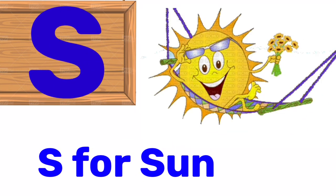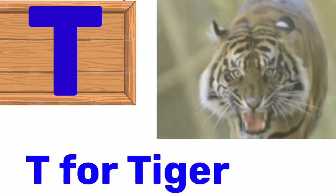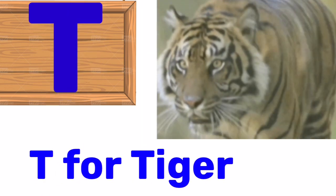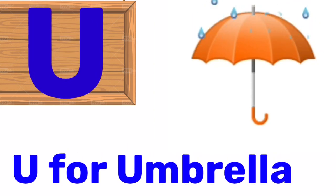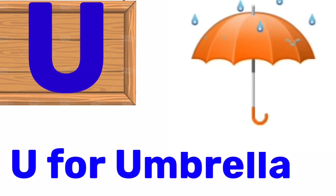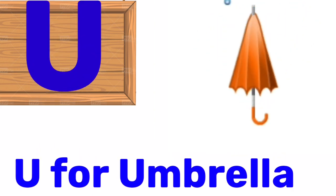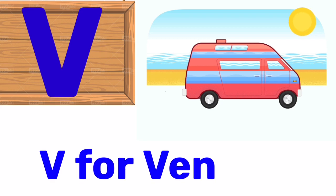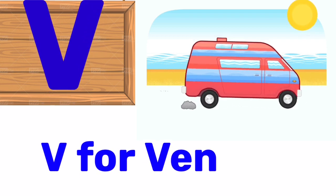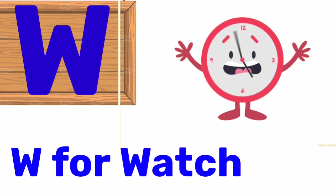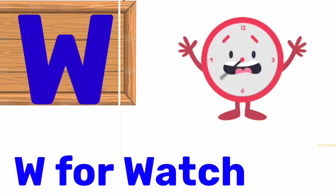S for sun, T for tiger, U for umbrella, V for wand, W for watch.